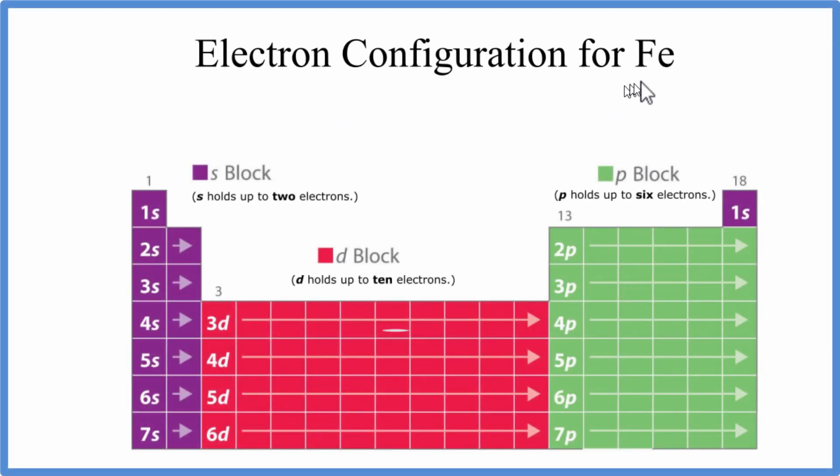To write the electron configuration for iron, Fe, we'll first go to the periodic table. So we'll look at iron on the periodic table. Iron, its atomic number is 26.